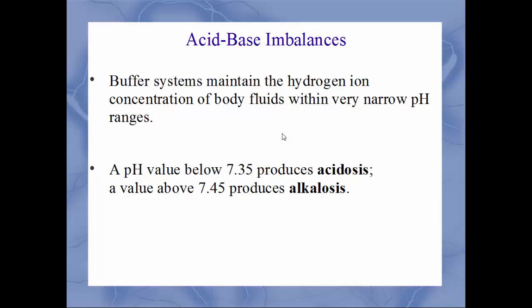All buffer systems work to keep pH within a very narrow range. The normal blood pH range is 7.35 to 7.45. If pH drops below 7.35, the condition is called acidosis — the blood is becoming more acidic. If blood pH rises above 7.45, the condition is called alkalosis — the blood is becoming more alkaline or basic.